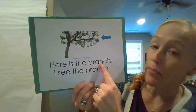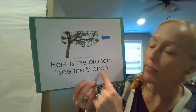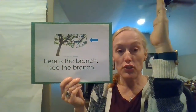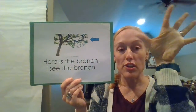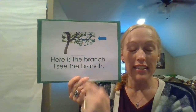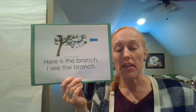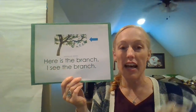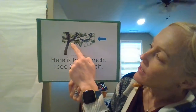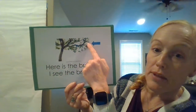Here is the branch. I see the branch. When the tree grows up through the trunk, branches start to grow off of the trunk of the tree. The branches are kind of like the arms of the tree, and they reach out. They go up, they go out to the side, and some branches even kind of point down a little bit. You can see this branch goes all the way across the picture.